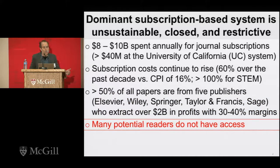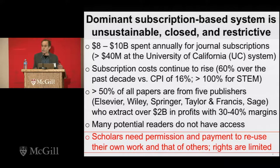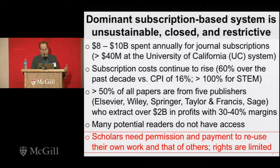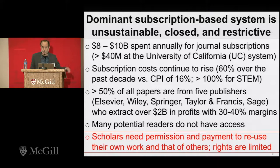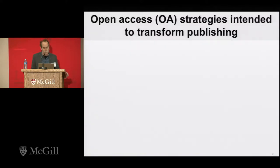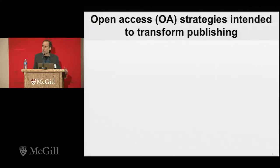Many readers of the content we generate don't have access. Many scholars who want to reuse this content need to seek permission. Authors have to get permission to reuse their own work because they've transferred copyrights, and they have to make payments. The rights are limited in how that work can be used. In this framework, the open access movement was really intended to transform publishing from this closed, predominant model to one that is open and involves the universal and free dissemination of scholarly content.